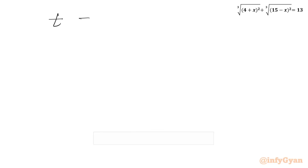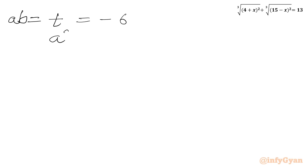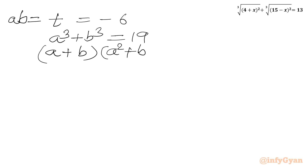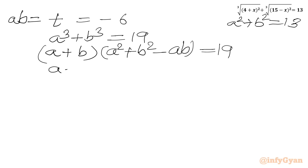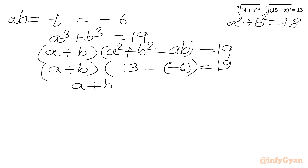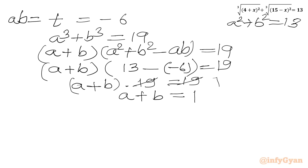With t = ab = −6, I now use Equation 2: a³ + b³ = 19. Applying the factorization a³ + b³ = (a + b)(a² + b² − ab): (a + b)(13 − (−6)) = 19, so (a + b)(19) = 19, giving a + b = 1.